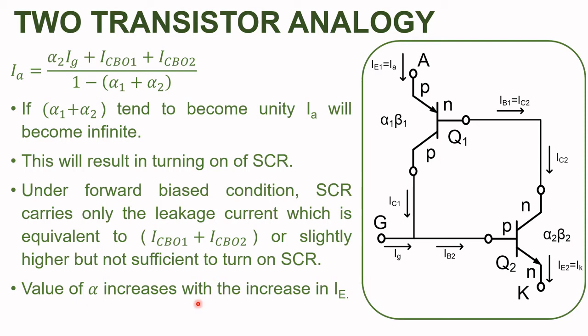What we want to prove is that whenever a gate current is supplied, the anode-to-cathode current will start flowing — meaning we want to prove that the anode current will reach an infinite value after supplying gate current, which means the SCR turns on. This will be possible when the sum of alpha1 and alpha2 tends to become unity.